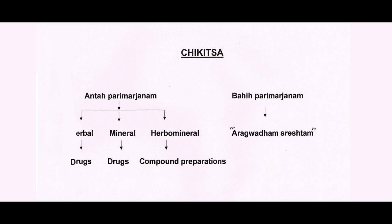Chikitsha can be classified into three levels: Anthapparimajanam by Parimajanam — with three types of treatments: herbal, mineral, and herbomineral. You come across these preparations in day-to-day practice. These combinations prove definitely effective. These preparations are to be taken based upon the condition of the patient — whether herbal or mineral is to be selected — these things are based upon the doctor's choice.